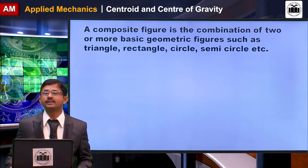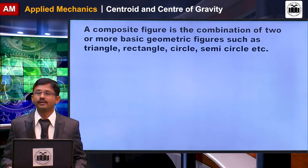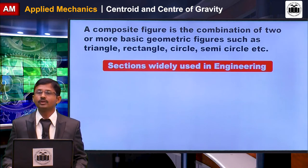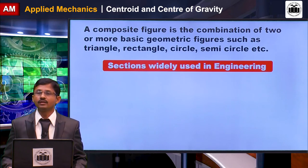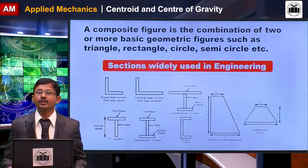Composite figures are combinations of more basic geometric figures such as rectangles, triangles, circles, and semicircles. Some composite figures widely used in engineering include equal angle sections, unequal angle sections, equal and unequal I-sections, channel sections, T-sections, and trapezoidal sections for retaining walls, gravity dams, and earthen dams.